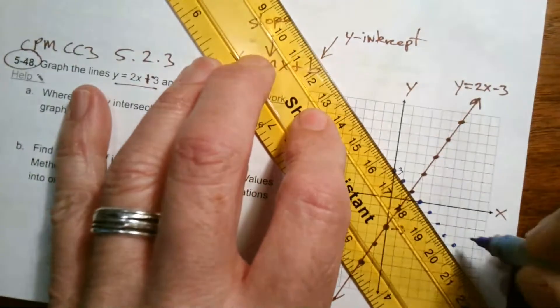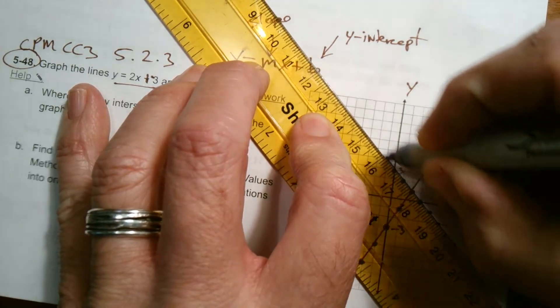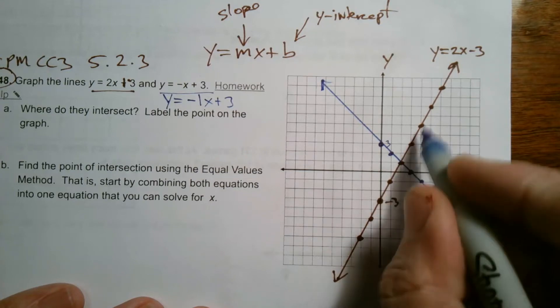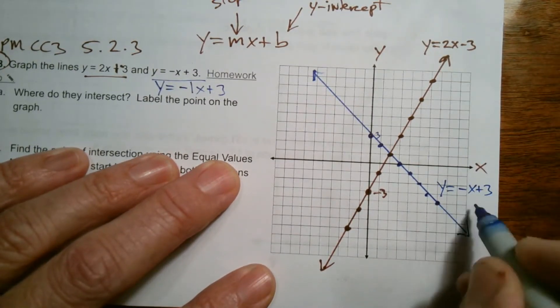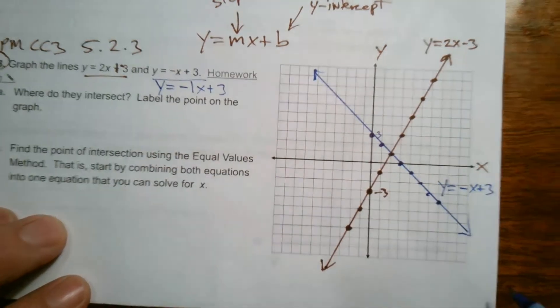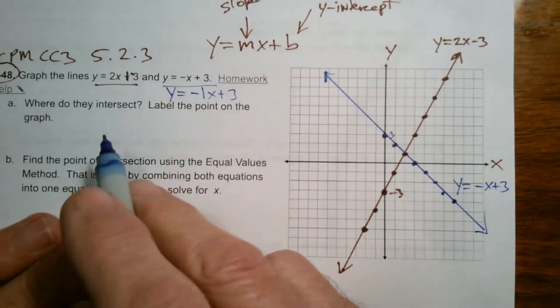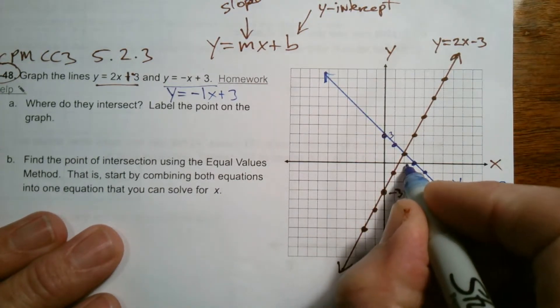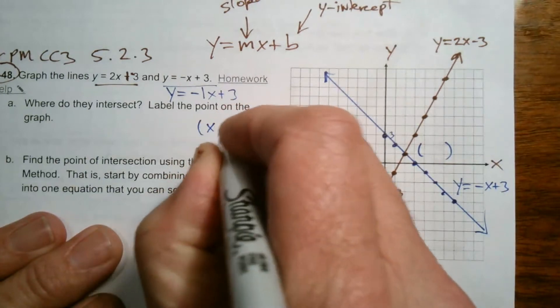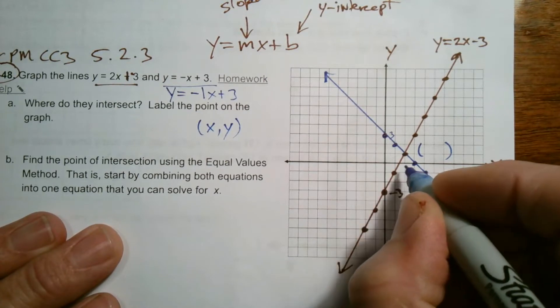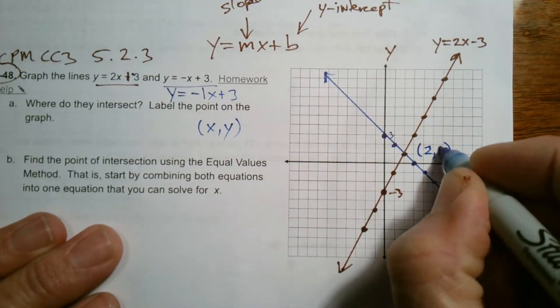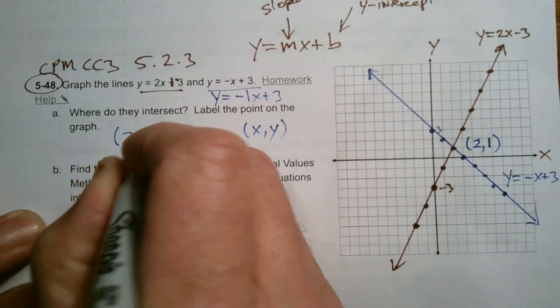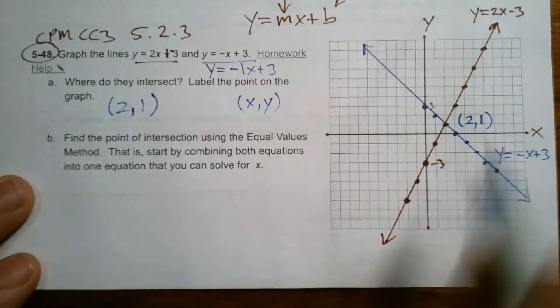Once I have enough points, I use a ruler to line them up nicely, because I want to see where the intersection point is. As I was building the points, I landed on one point that was on both lines at the same time. I label the second line: y equals negative x plus 3. The intersection point is at x equals 2 and y equals 1, so I label it as the point (2, 1).